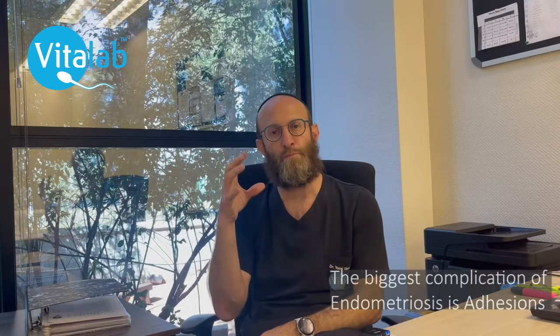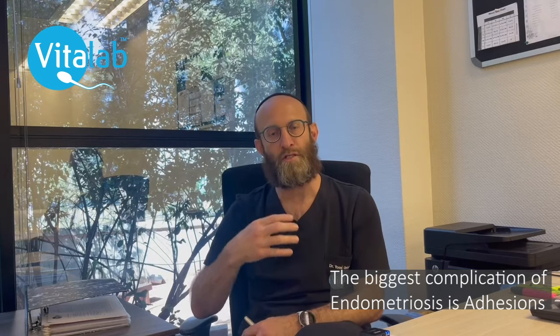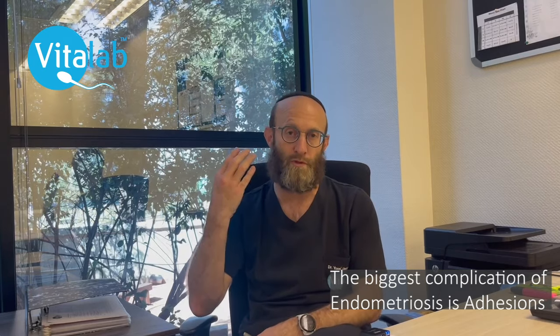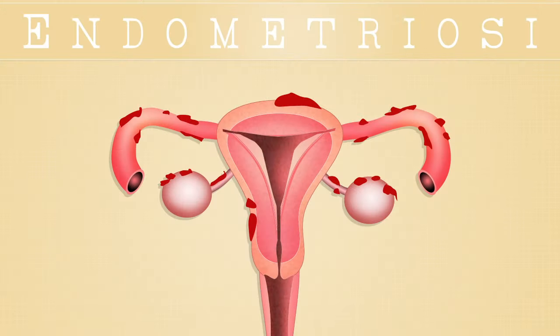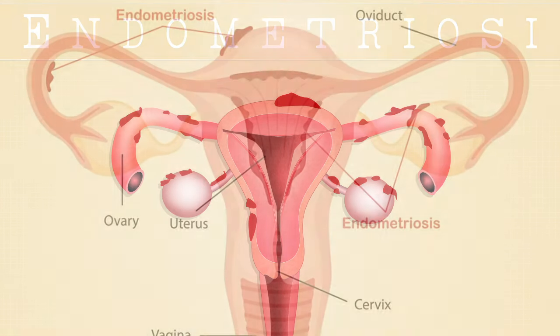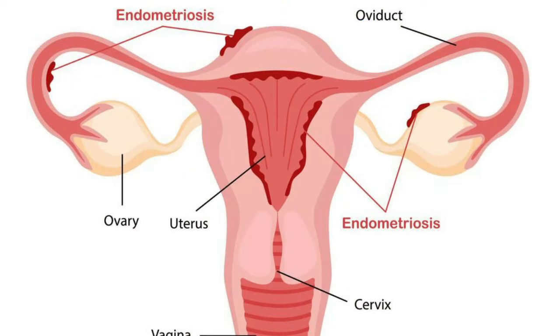The presence of this blood creates inflammation, and inflammation brings a whole lot of white blood cells to try and break the blood down. We then get the biggest complication of endometriosis, which is what we call adhesions or scarring. The inflammation causes all of the organs to retract and come together, and the relationship between the fallopian tubes, the ovaries, and the uterus becomes disturbed.